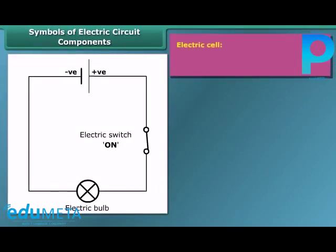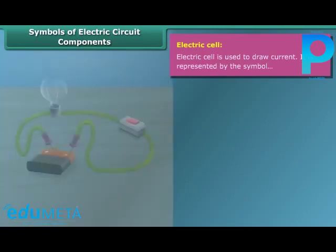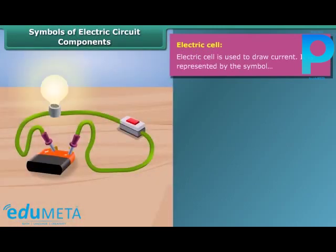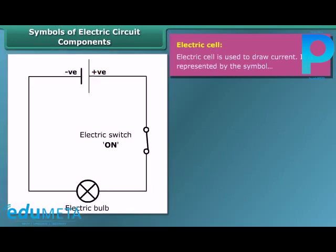An electric cell is a simple device which is used to generate electricity. Electricity is produced by chemical reaction. It has a positive terminal and a negative terminal. In the symbol of the electric cell, the longer line represents the positive terminal and the thicker, shorter line represents the negative terminal.